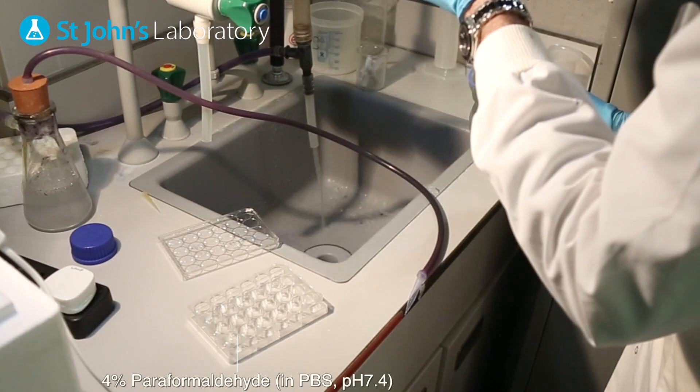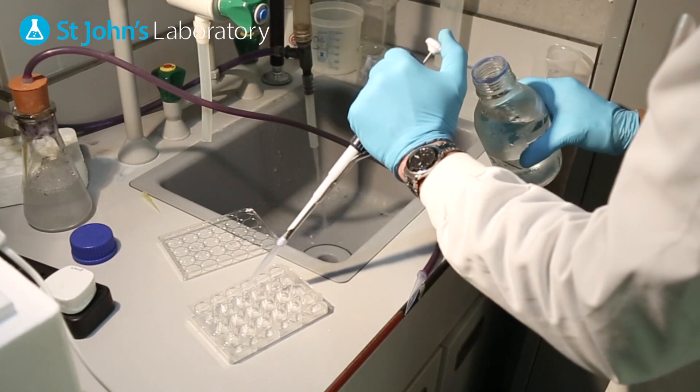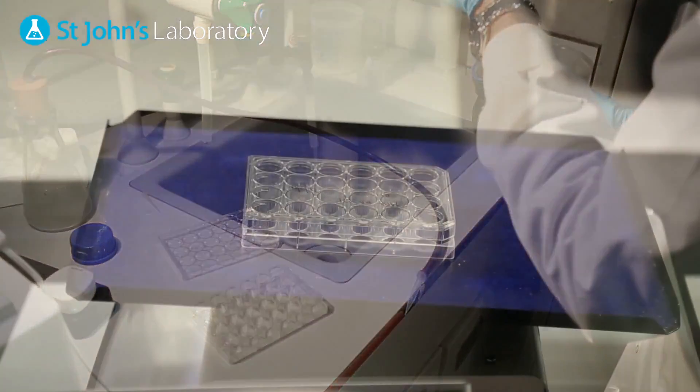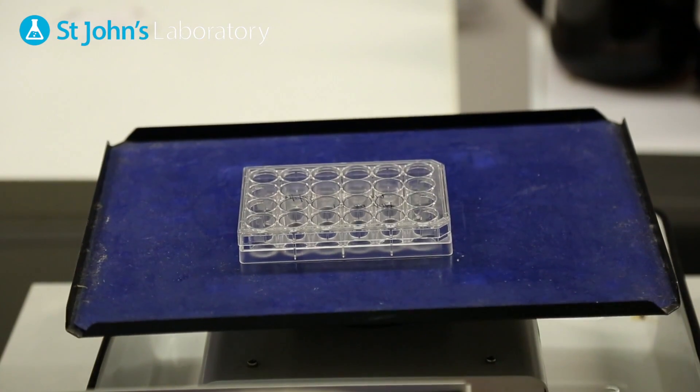Using a pipette gently dispense 4% paraformaldehyde down the side of each well. Ensure not to disrupt the cell monolayer and incubate for 20 minutes.